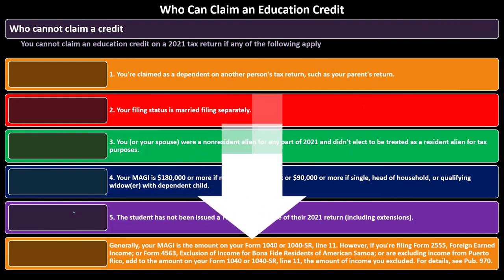Generally, your modified adjusted gross income is the amount on Form 1040 or 1040-SR, line 11 — that's your adjusted gross income. However, if you're filing Form 2555 for foreign earned income, Form 4563 for exclusion of income for bona fide residents of American Samoa, or are excluding income from Puerto Rico, you add back those amounts to arrive at the MAGI. That's where the modification comes in. If you have tax software, it can help with this. For more detail, see Publication 970.